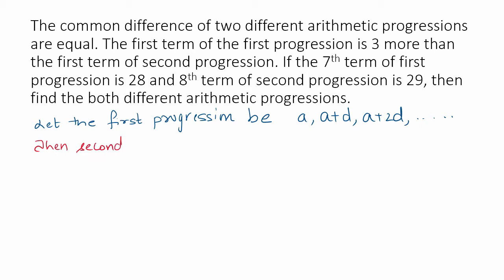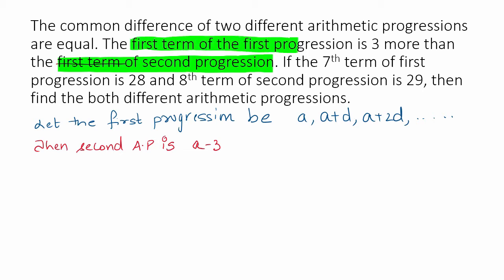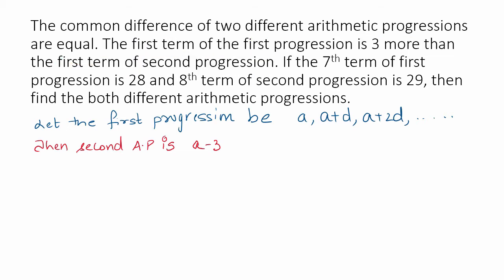For the second progression, the first term is A minus 3. Why A minus 3? Because we know the first term of the second progression is 3 less than the first term of the first progression. So the second term is A minus 3 plus D, the third term is A minus 3 plus 2D, and so on. The common difference is the same between the two.